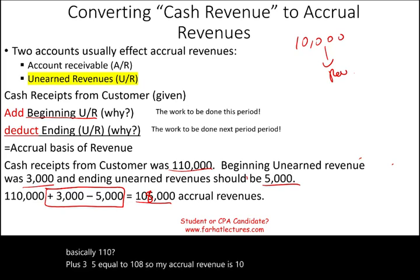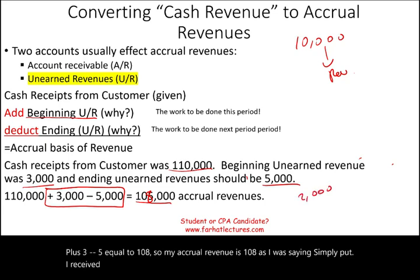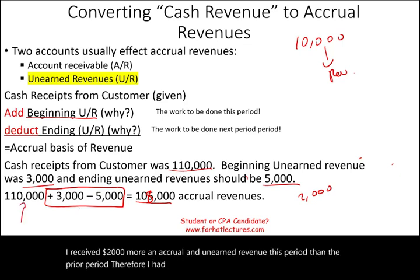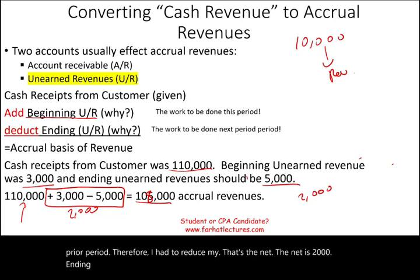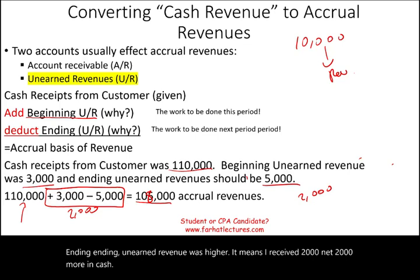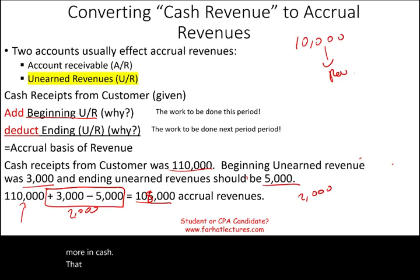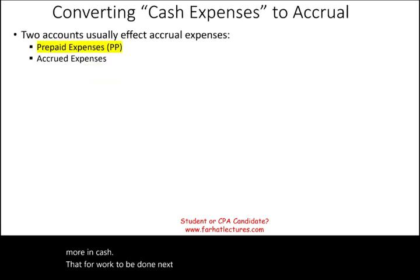Simply put, I received $2,000 more in unearned revenue this period than the prior period. Therefore, I had to reduce my revenue by that net $2,000. The ending unearned revenue was higher, meaning I received $2,000 more in cash for work to be done next period. That's how you convert revenues.